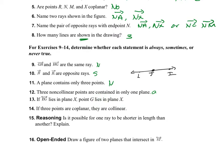If line AG lies in plane X, then point G lies in plane X. That's also always. Why? There's no way for the line to be on plane X while point G — which is on that line — is not on that same plane.